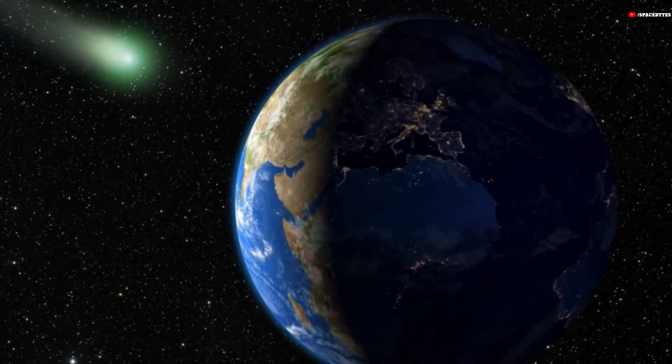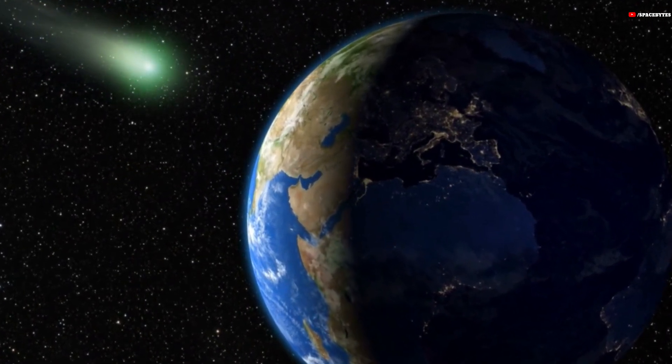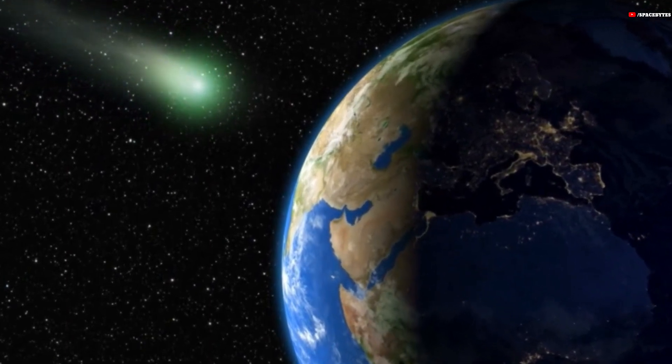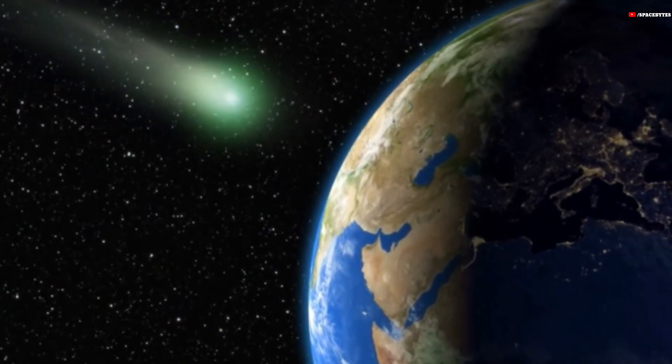Nishimura comet is green in color and about a half-mile in size, will reach its closest point to Earth today before racing around the Sun and back out into space.